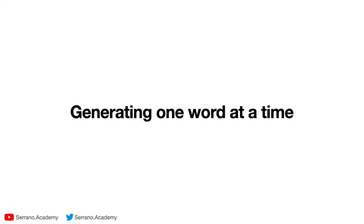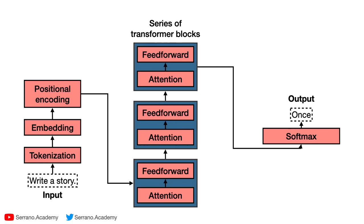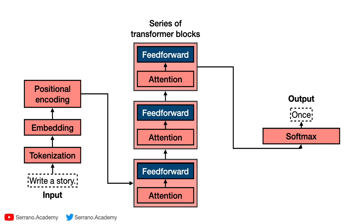Before we get to the architecture of a transformer, let's look at this concept of generating sentences one word at a time. The main engine in the middle is a series of transformer blocks — in particular the feed forward part. It's a neural network that tries to find the next word in a sentence, and all the other blocks are there to help this neural network work as best as possible.